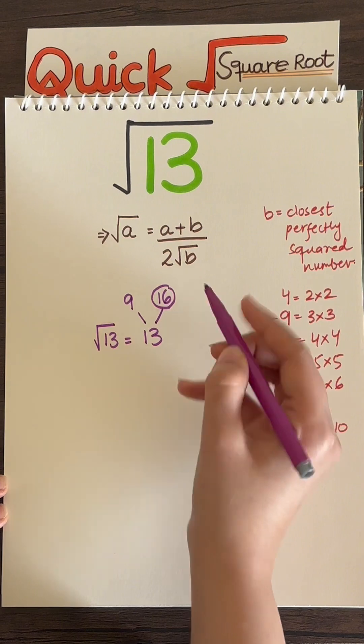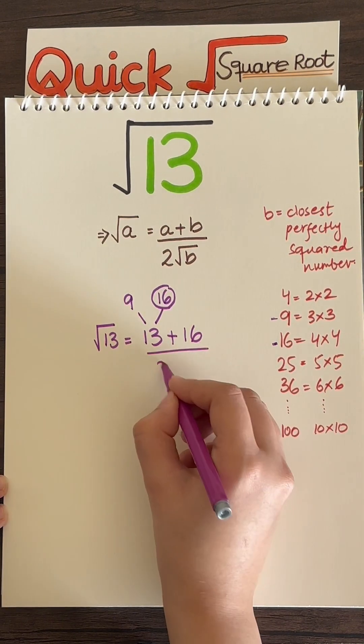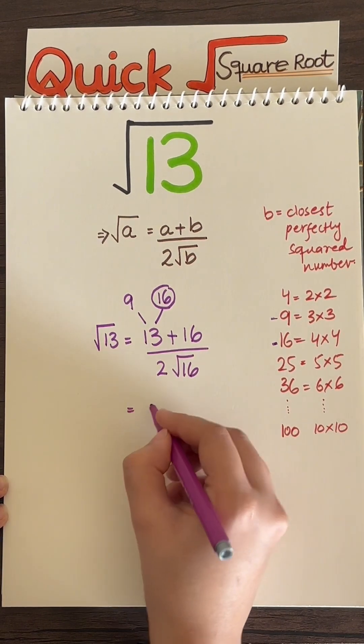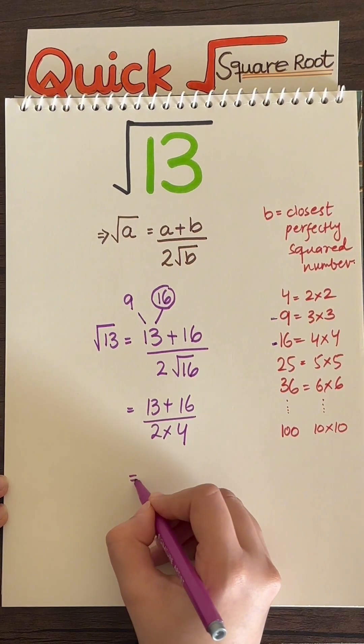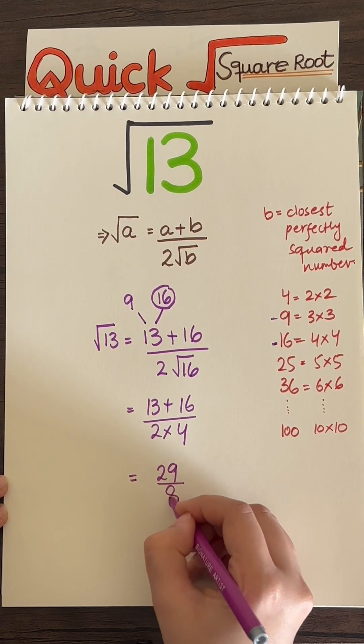That's 16. So let's do 13 plus 16 over 2√16. Unwrapping √16 gives us this equation. Now just simply add both the values, which will become 29 divided by 8.